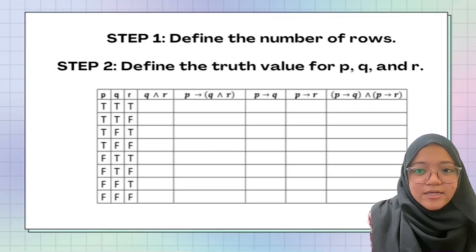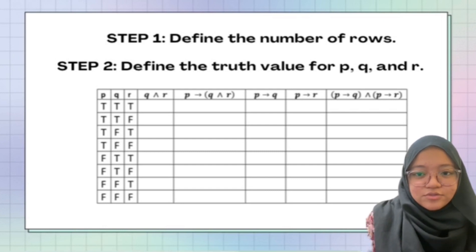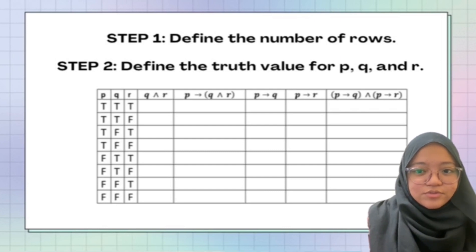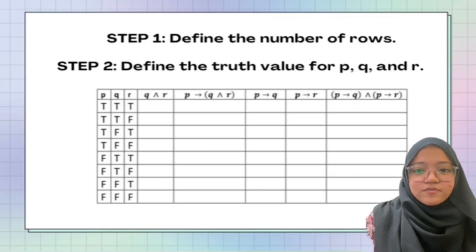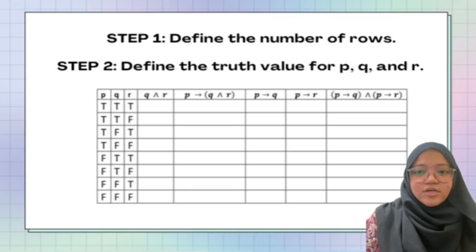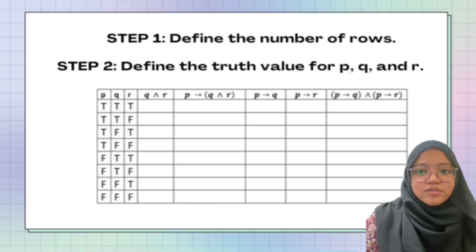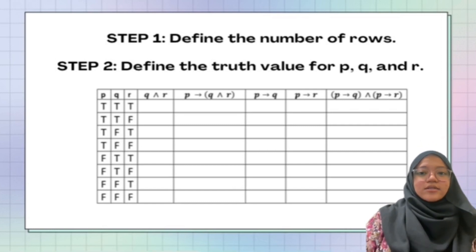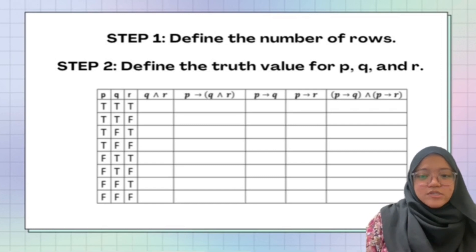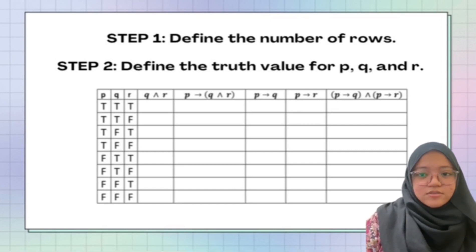For P: T, T, T, T, F, F, F, F. For Q: T, T, F, F, T, T, F, F. For R: T, F, T, F, T, F, T, F.